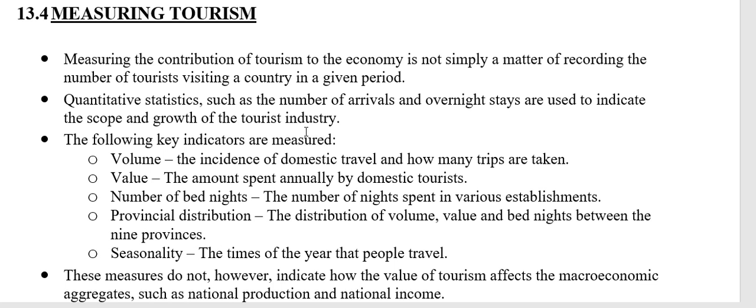We also need to know what times of the year people travel, because different kinds of tourism take place in different seasons. For example, if you go to the coast, the preferred season is the December summer holidays when the weather is nice. But if you go to the Kruger National Park, the most popular time is winter, because the grass is dead and it's easier to see the animals. Tourism is seasonal, focused on specific activities during particular seasons, so we need to identify the popular seasons and when the busiest and quietest times of the year are.